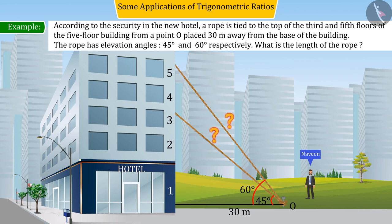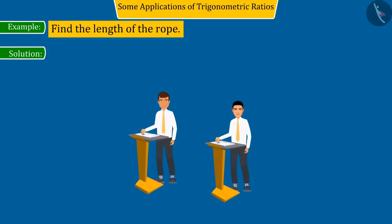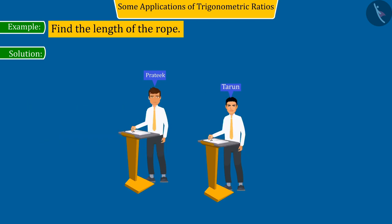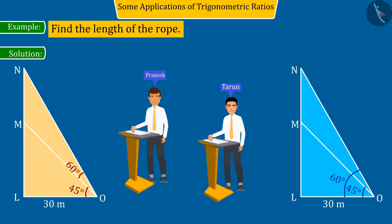So he asks the hotel staff Prateek and Tarun to find the length of the rope. They both use trigonometric ratios to find the length. And both of them first create the figure in their notebook with the help of the given information.